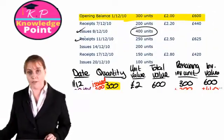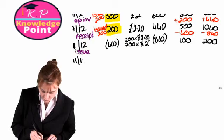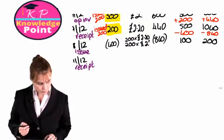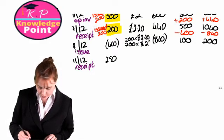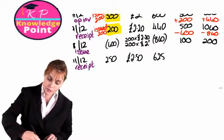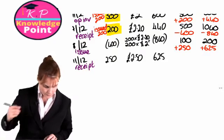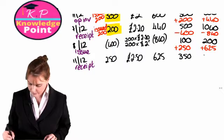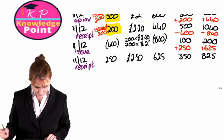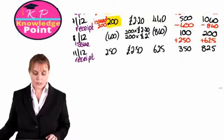On the 11th of December, we have a receipt of 250 units with a unit value of £2.50. The total value is £625. We add that on to our existing inventory.